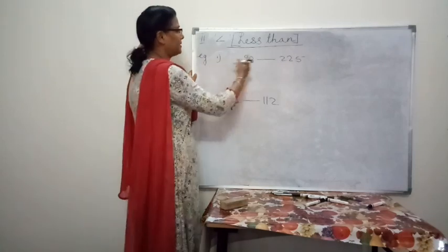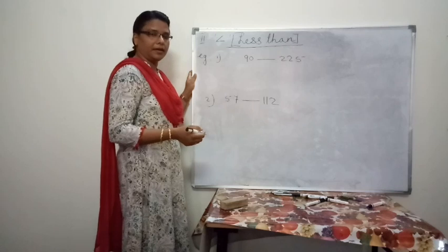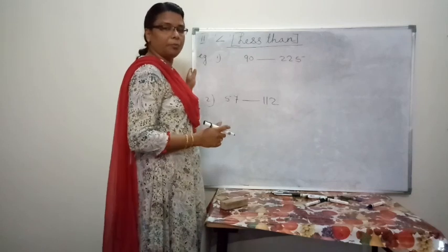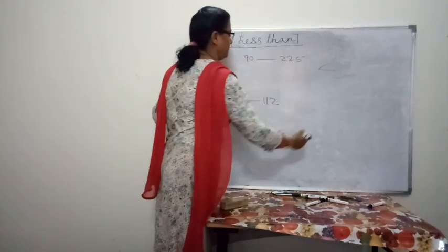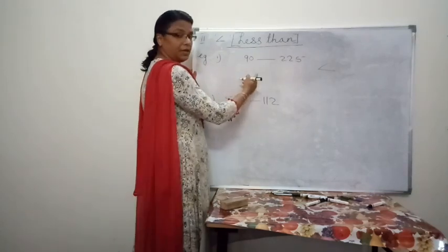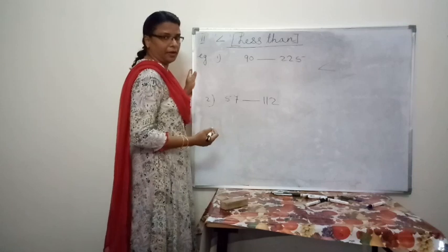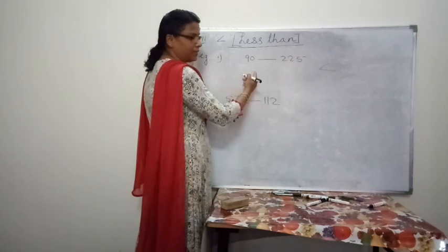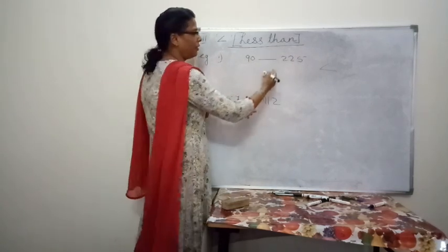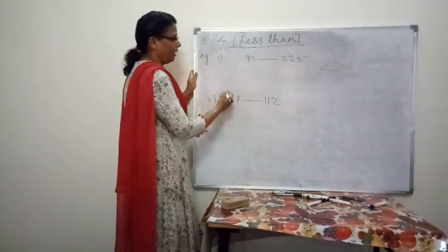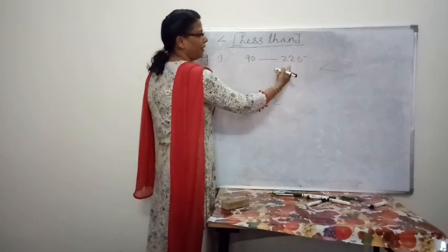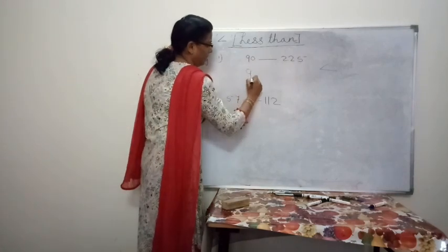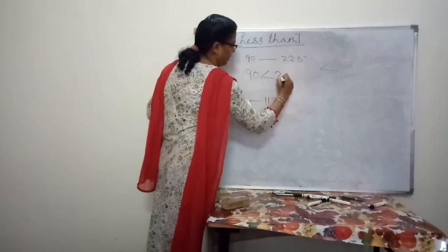The second part is less than. If a number is smaller than another number, we use the symbol less than — just the opposite of greater than. For example, 90 and 225. 90 has 2 digits, whereas 225 has 3 digits. So 90 is the smaller number and 225 is the bigger number. Therefore, 90 is less than 225.